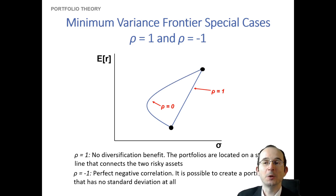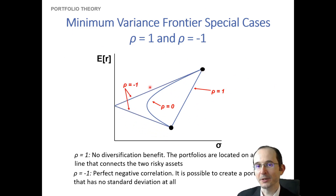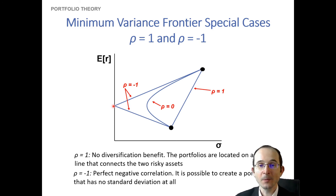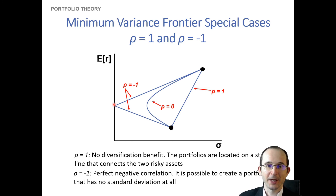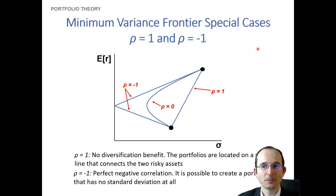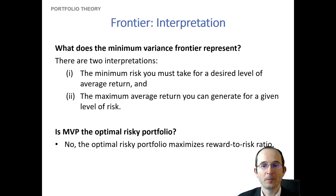Finally, if the correlation were perfectly negative, we get a really exaggerated minimum variance portfolio that takes standard deviation all the way down to zero, since two perfectly negatively correlated assets can produce a portfolio with no standard deviation. This means the frontier touches the vertical axis, resulting in a very bowed-out shape with a correlation of negative one.